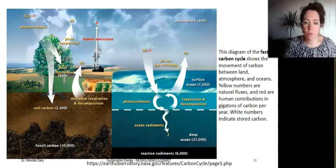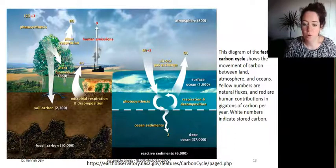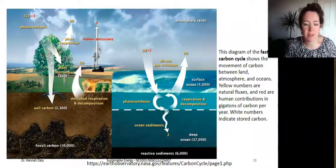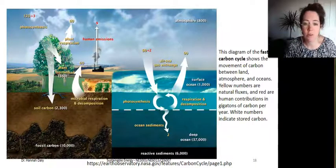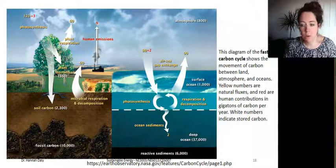Carbon is actually the fourth most abundant element in the universe and it's forged in the heart of aging stars. Most of Earth's carbon, there's about an estimated 65 trillion tons, is stored in rocks where it's relatively non-reactive. The rest is stored in reservoirs in the ocean, in the atmosphere, plants, soil, and in fossil fuels as well.